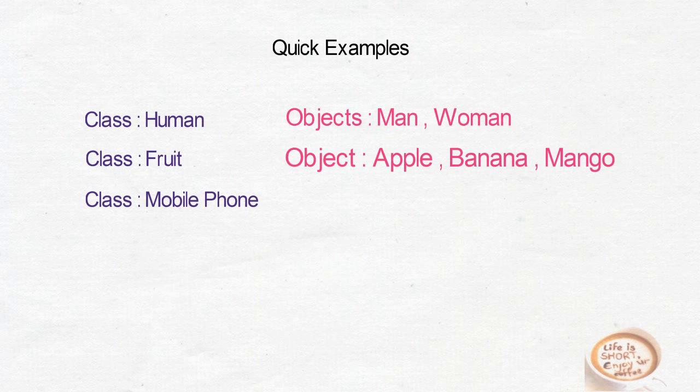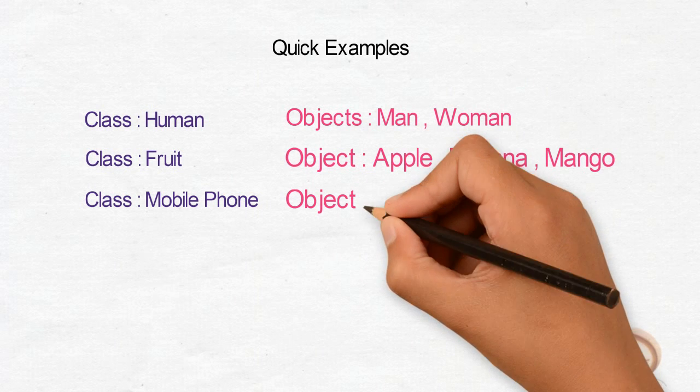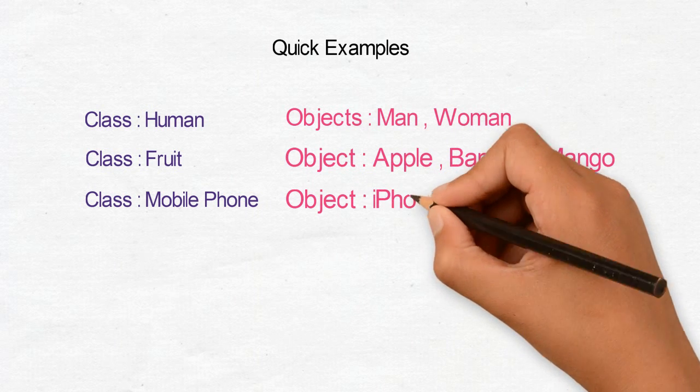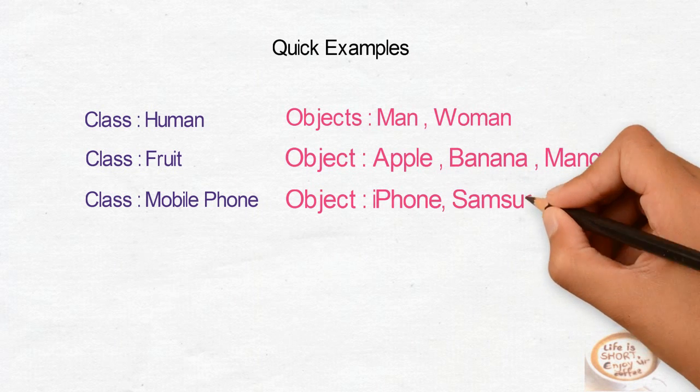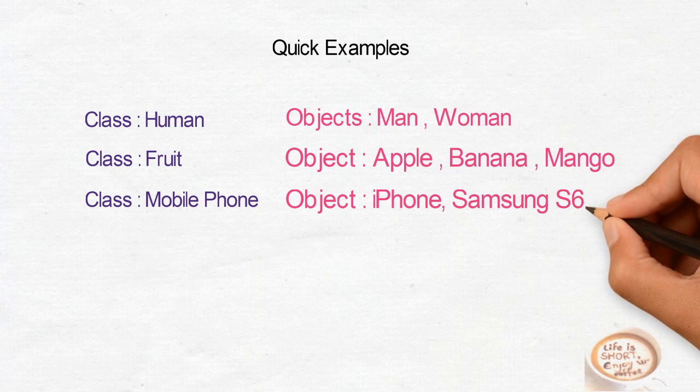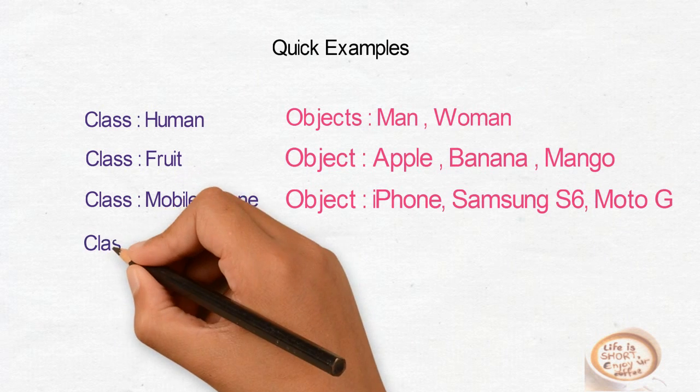Let's take another example. Mobile phone. What is mobile phone? A general term used for all the devices using which we can talk or do various other tasks. Under this category you can put iPhone, Samsung X6, and Moto G, etc.